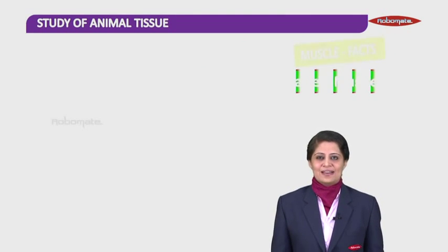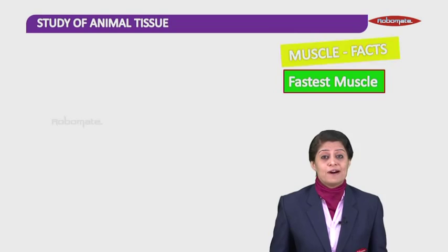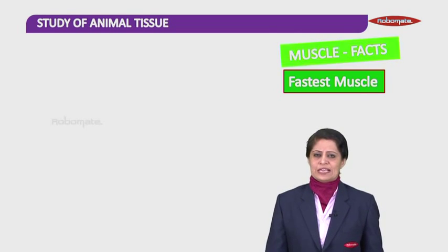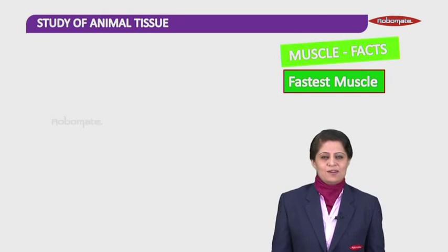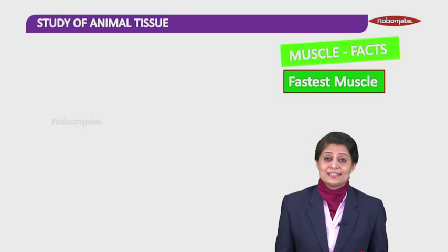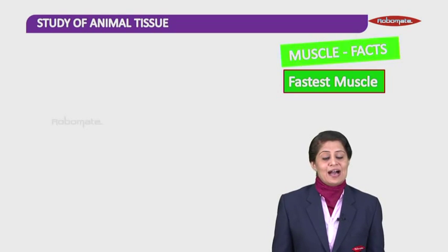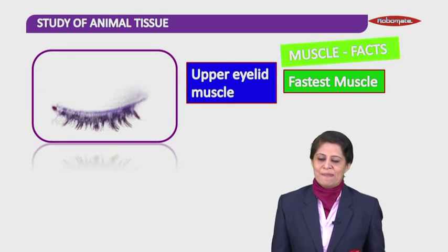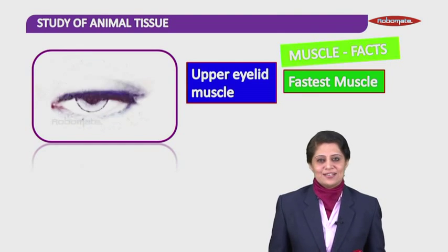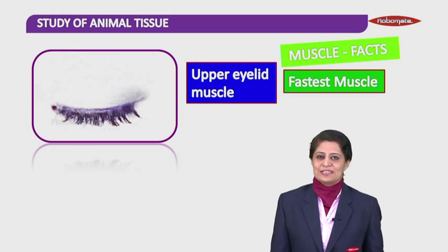Which muscle is the fastest muscle in your body? Fastest moving — a fraction of a second it contracts, kind of a reflex action. The fastest moving muscle in your body is your upper eyelid muscle. Beautiful reflex it shows. Upper eyelid muscle is the fastest muscle.